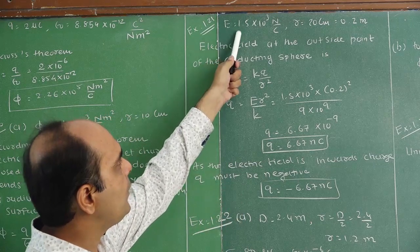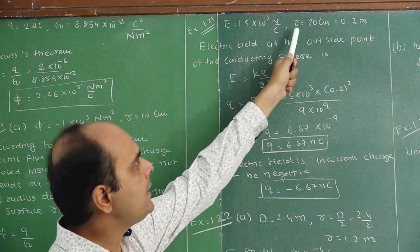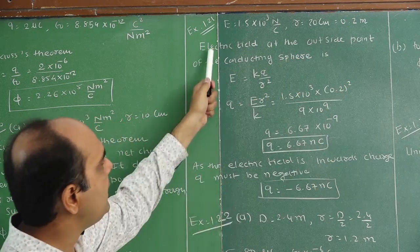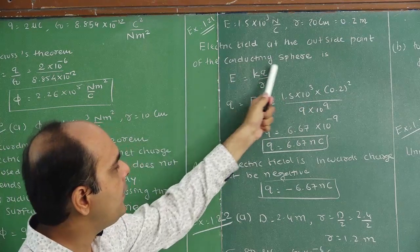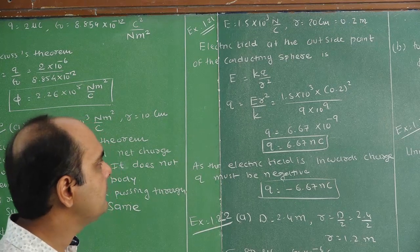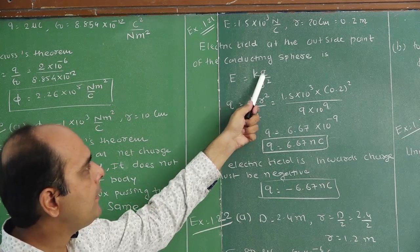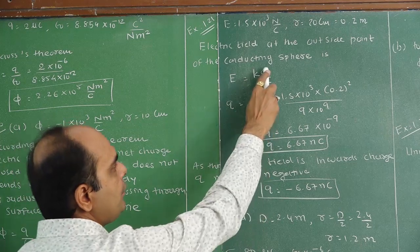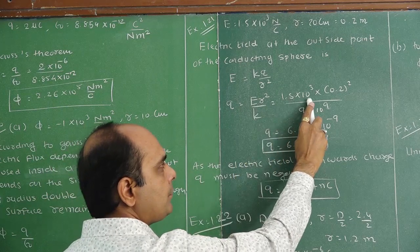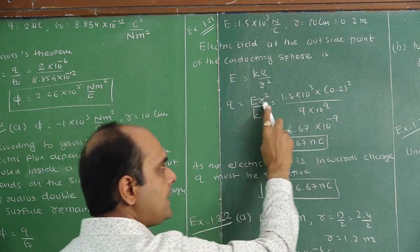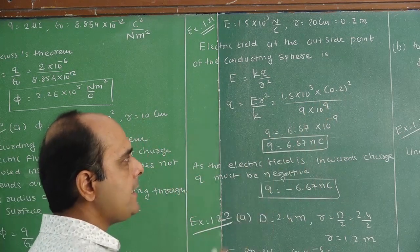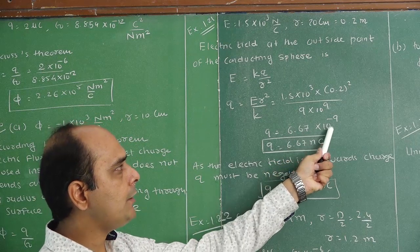The electric field is 1.5 into 10 to the 3 Newton per coulomb. Distance R is 20 cm, converting to meters: 0.2 m. The electric field at an outside point of the conducting sphere is given by E = kq by r square. E and r are given; calculate charge q. Making q the subject: q = E times r square divided by k. Substituting: E is 1.5 into 10 to the 3, r is 0.2 squared, k is 9 into 10 to the 9. The answer becomes 6.67 into 10 to the minus 9 coulombs.